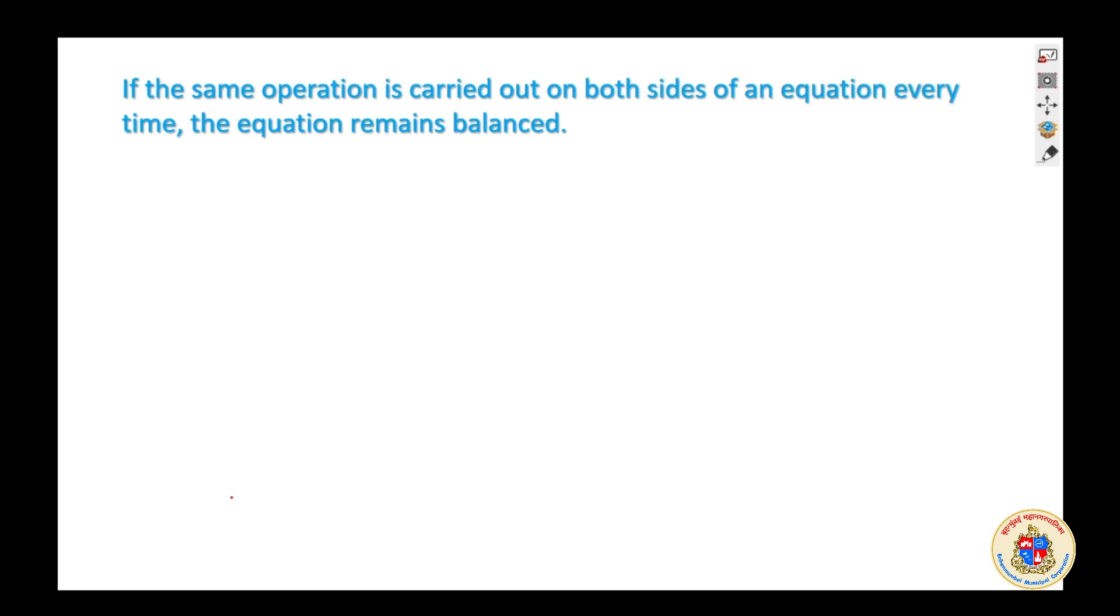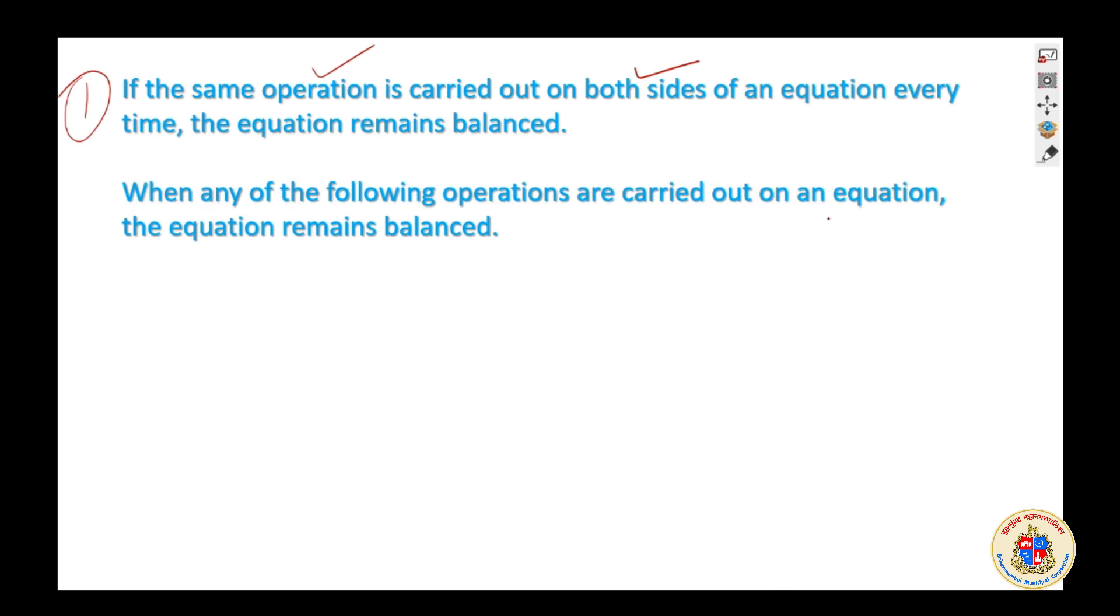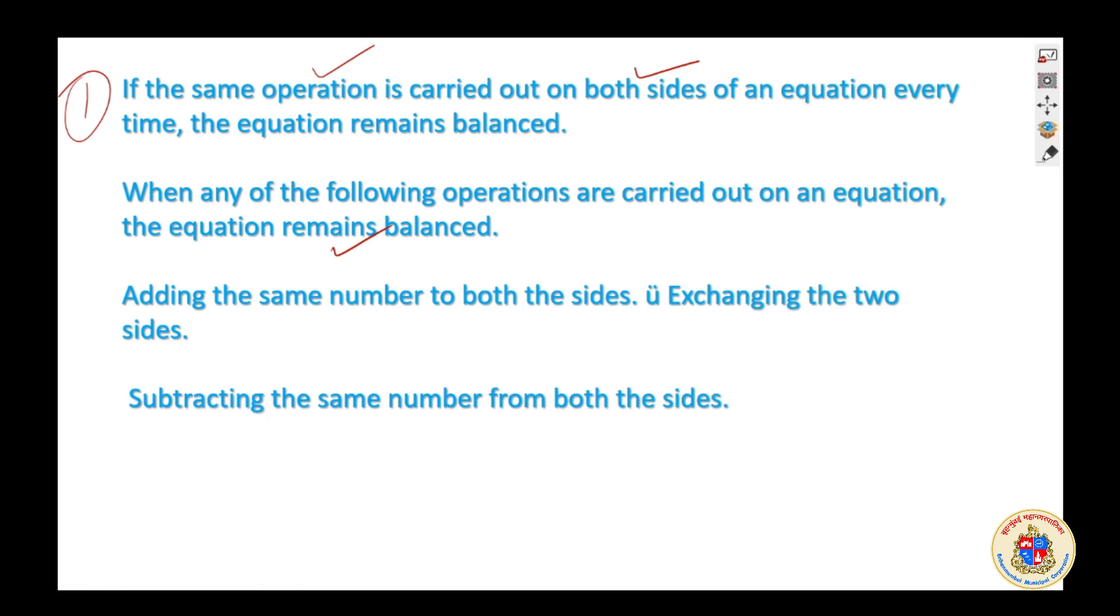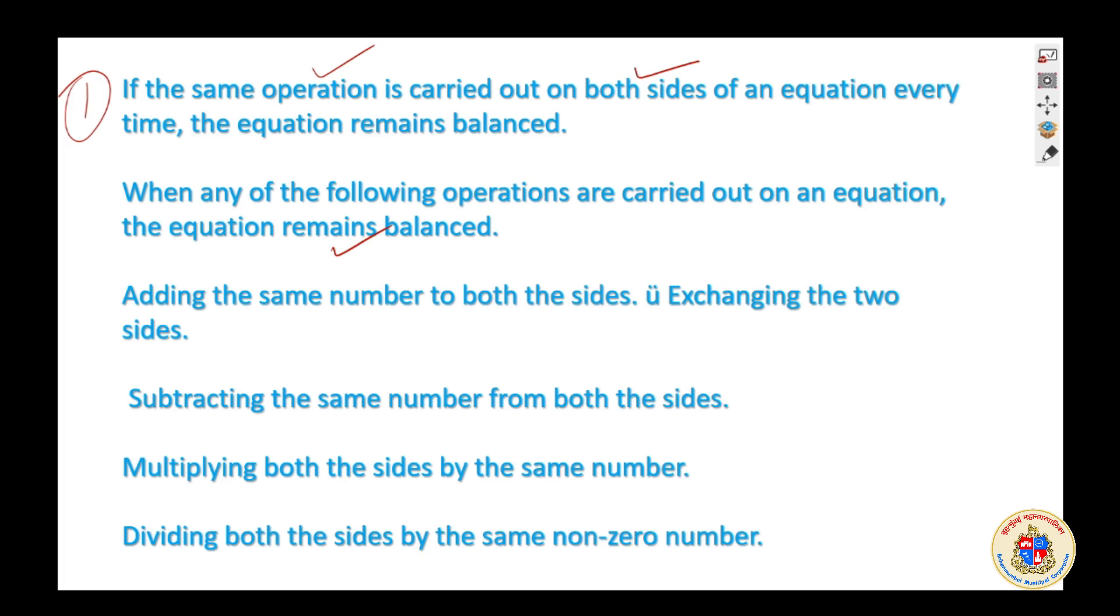So this way, equations are very, very interesting and it will solve your problem. Whatever operation you carried out on one side, same operation you should carry out on both sides of the equation. One important point. When any of the following operations are carried out on an equation, the equation remains balanced. What is that? Adding same number on both sides. Subtracting same number on both sides. Multiplying both sides by the same number. Dividing both sides by the same number. The equation remains balanced. This is our main learning. This is the main point or main learning.